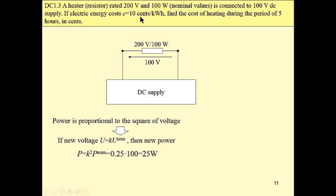We know the cost of energy, so we have to calculate the energy which is dissipated, consumed during the 5 hours. And this energy is 5 multiplied by 25, which is 125 Watt hour. And then multiplied by unit cost of energy, we will obtain this result. This result means that this heating during 5 hours will cost us 1.25 cents.